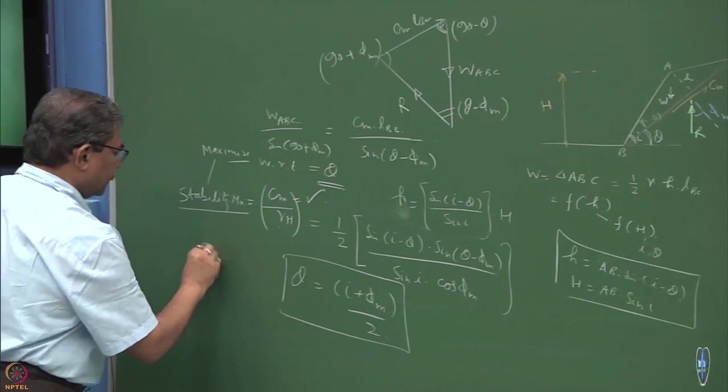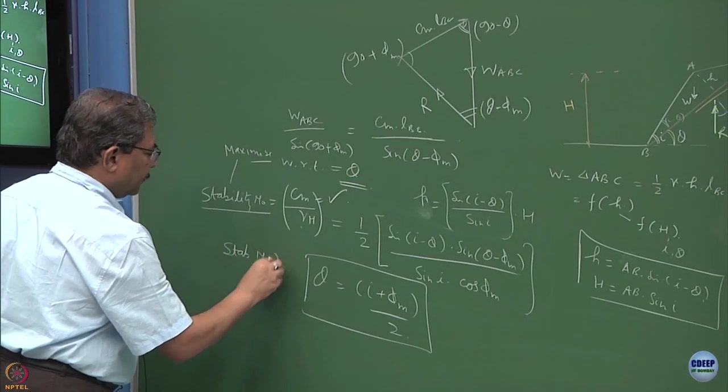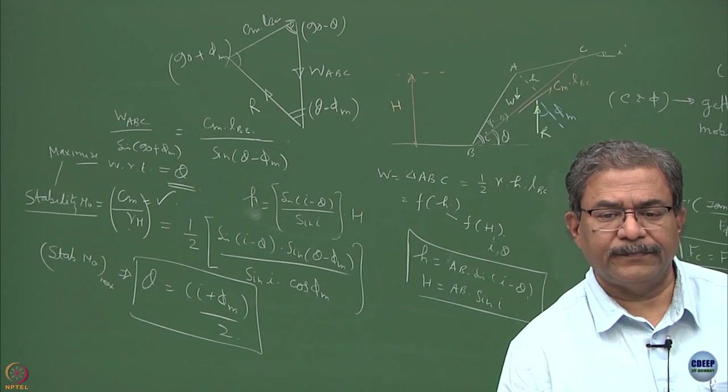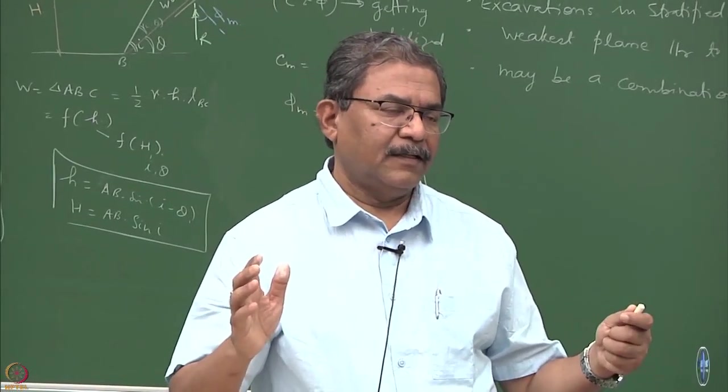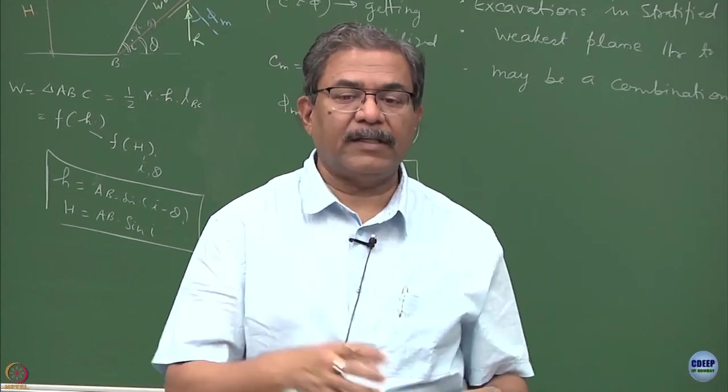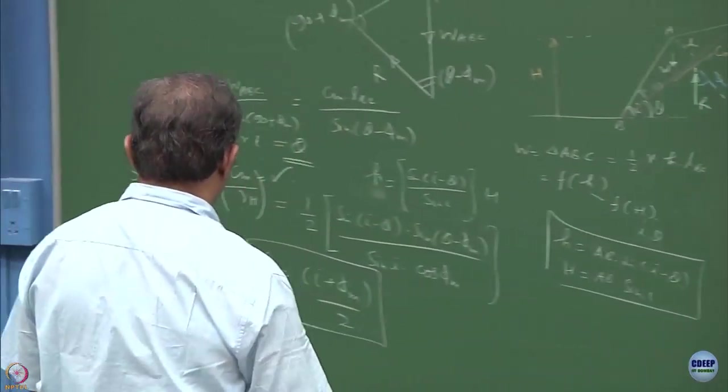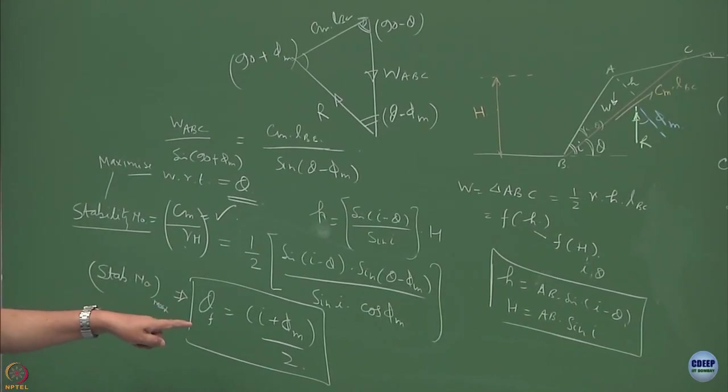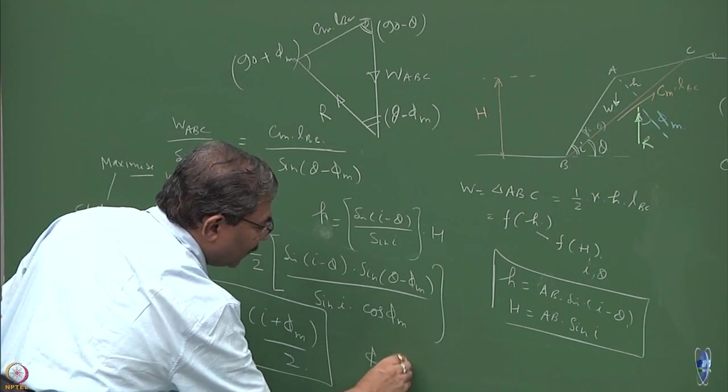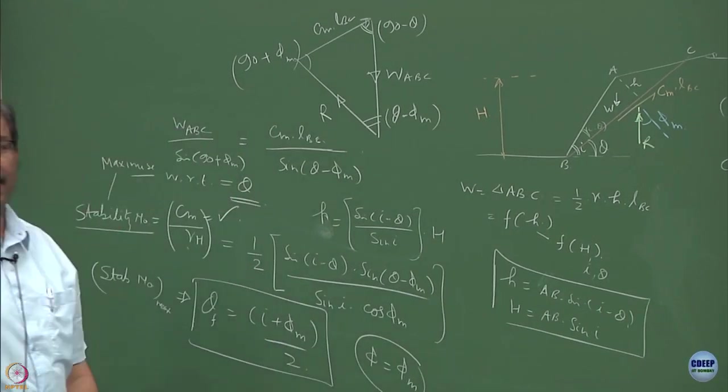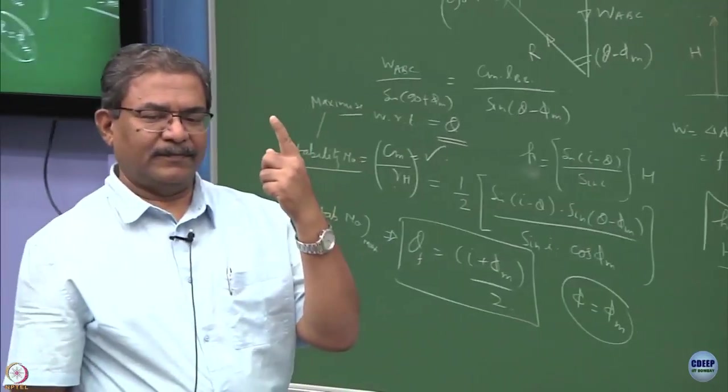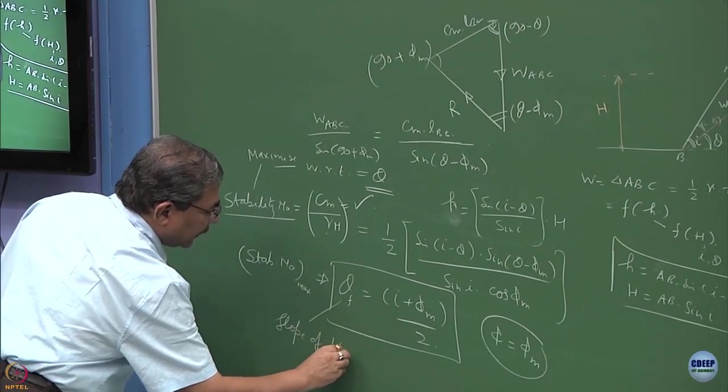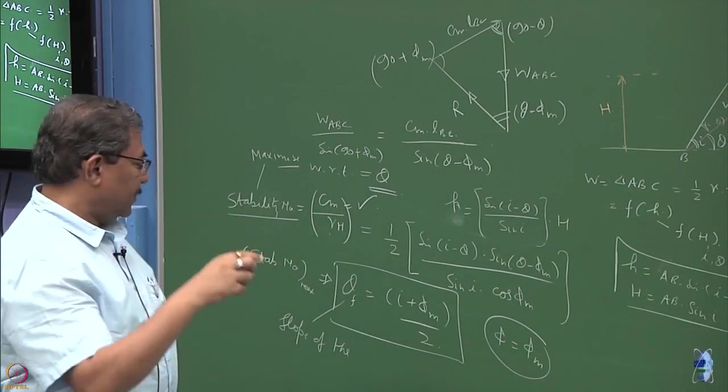This theta is normally written as theta failure. That means this is where the failure is going to take place. And at failure, what we can do is we can also assume that the value of phi is equal to phi m, the most critical condition. That means the factor of safety becomes 1.